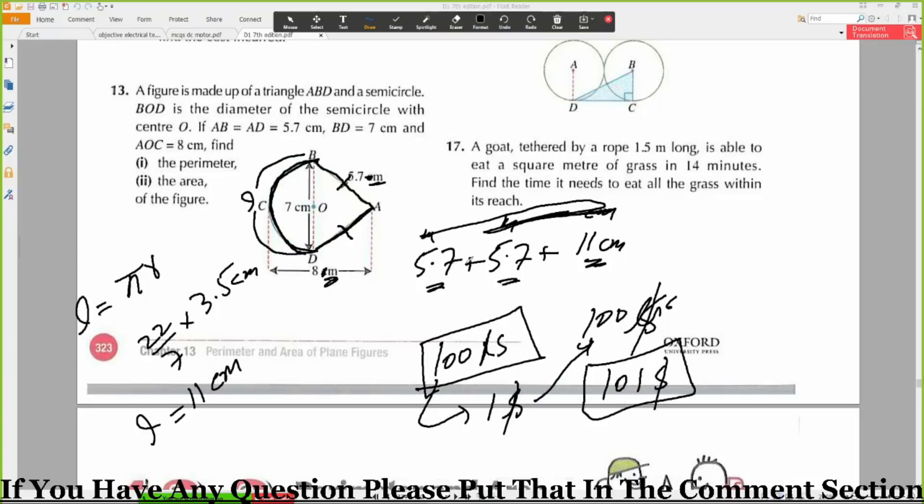So this is your perimeter. Now we can add it. You will get 22.4 centimeter. So this is your perimeter.